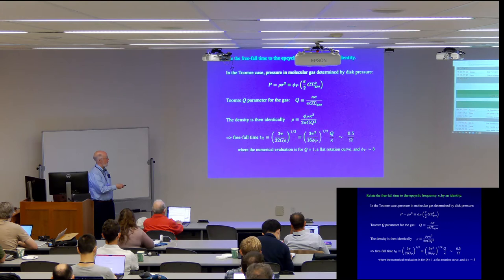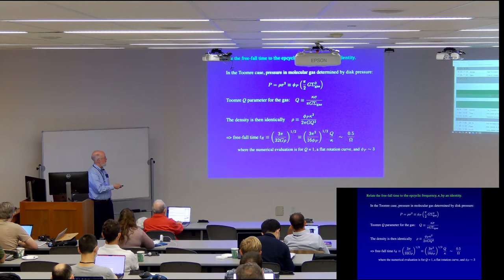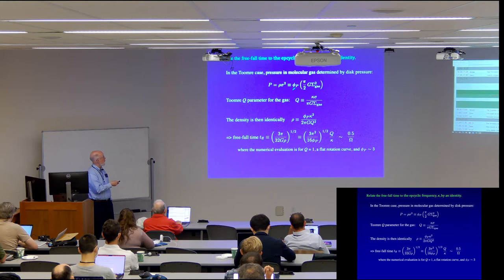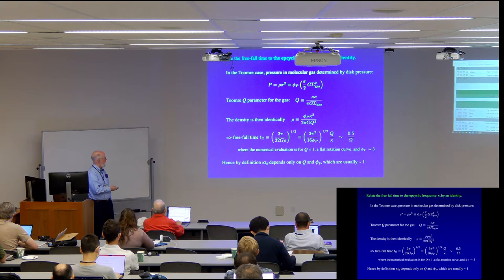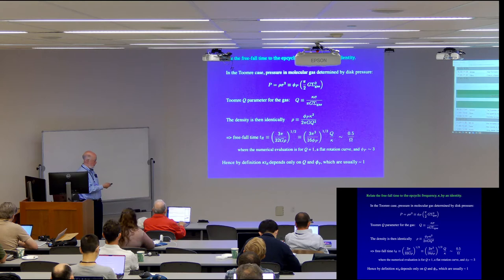The physics comes in when you have to go ahead and say, well, what is this, the value here? That takes a lot of physics and observation, hopefully, which we, and similarly for the epicyclic frequency. So in the case that we focus on here where we set a Q equal to a critical value of order to one, have assume a flat rotation curve and set this parameter that governs the pressure to three, then it turns out that the freefall time is about a half divided by the angular rotational frequency. And so by definition, kappa Tf times the freefall time really depends only on these two parameters, Q and P, which are generally of order unity. Okay.